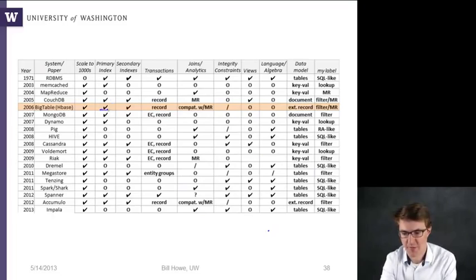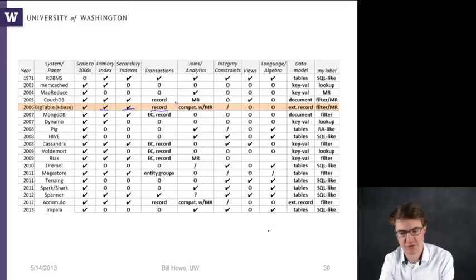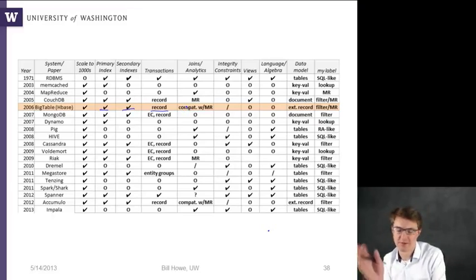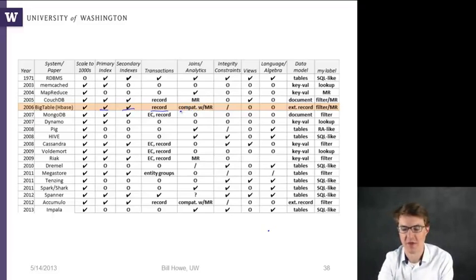And so here we're looking at primary index lookup, secondary index lookup. Transactions are also at the scale of an individual record. Joint analytics is not supported by Bigtable directly, but in HBase, which is the open source implementation of it, and in Google's implementation as well, it was designed to be compatible with MapReduce. And so you can run MapReduce over the same data that's stored in Bigtable, so they're complementary.